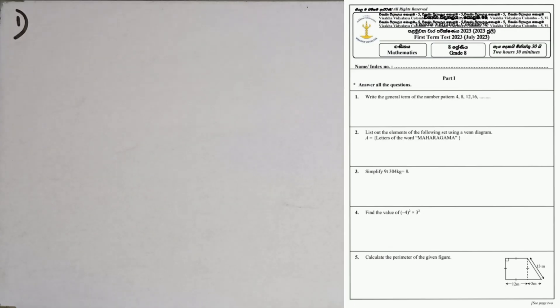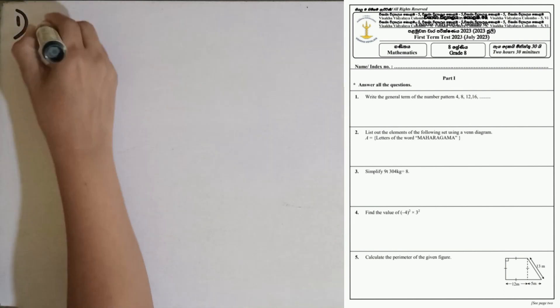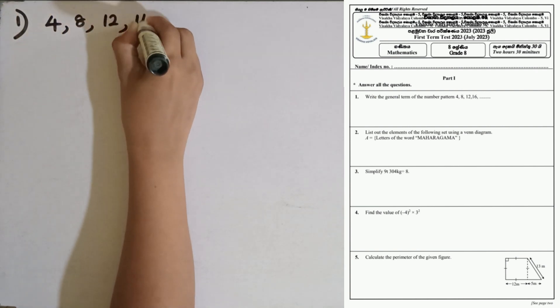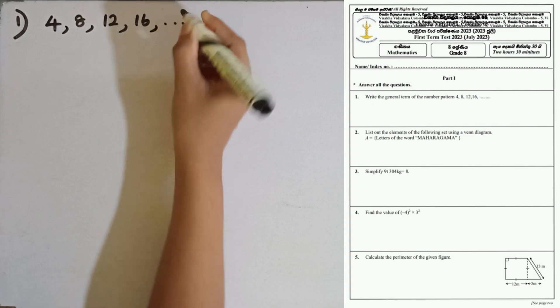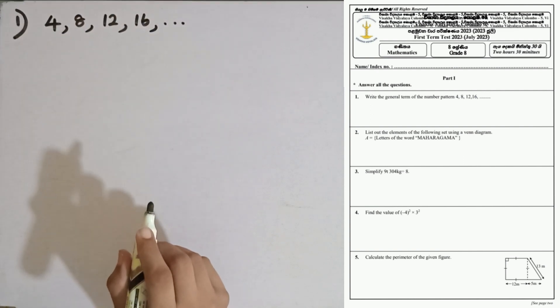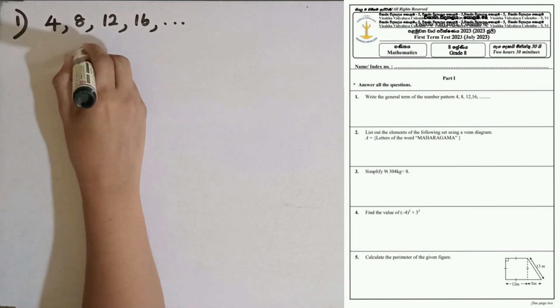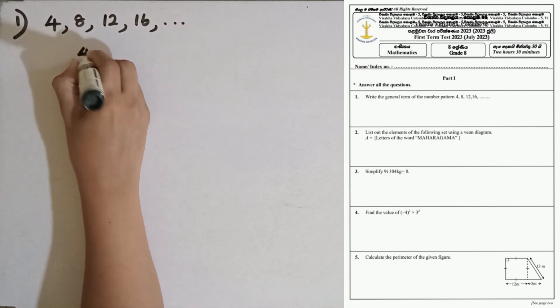Question number 1. Write the general term of the number pattern: 4, 8, 12, 16. This is the number pattern of multiples of 4. So the general term can be written as 4n.